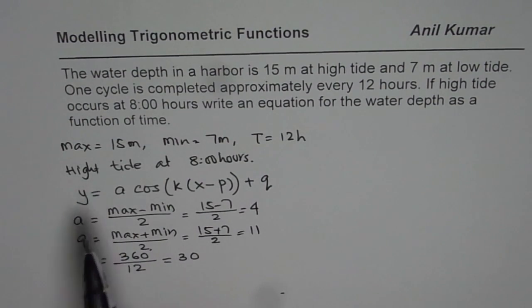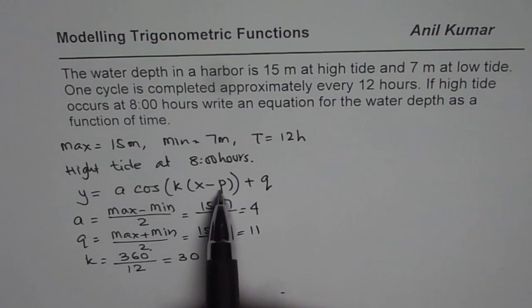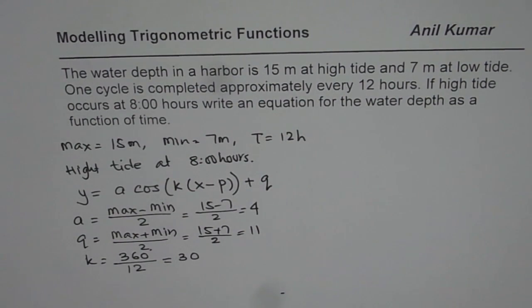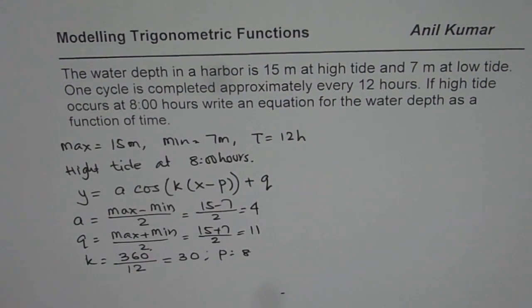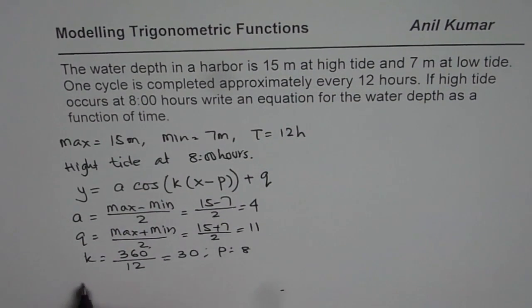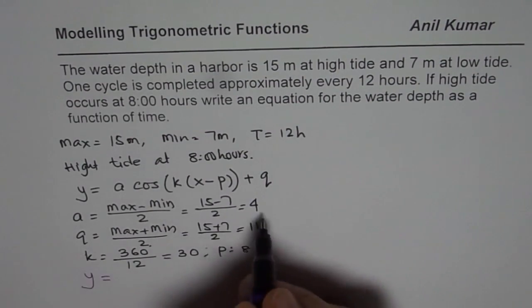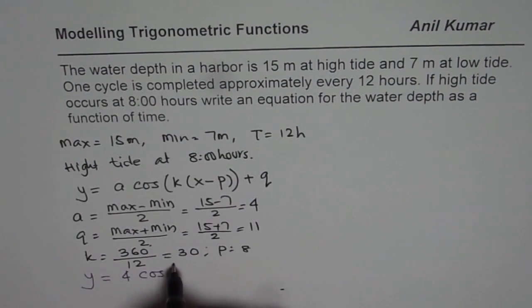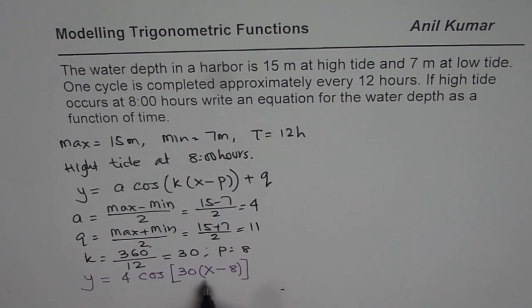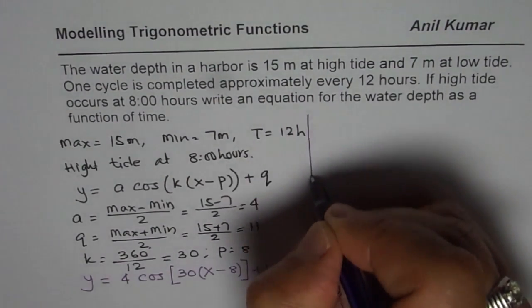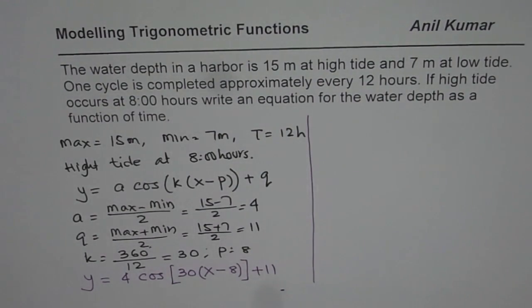Since we know that high tide is at 8, we know p is 8 for cosine function. So p equals to 8 for cosine function. Based on this we can write down our equation as y equals to, a is 4, cos of k is 30. And x is our time, we are using x as time in hours, minus 8, since after 8 it is at maximum, plus 11. So that is the cosine function for our wave.